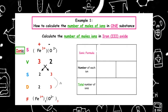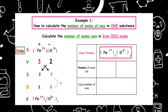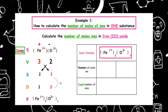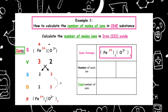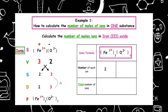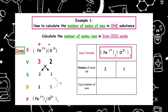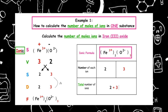Next, we write out the ionic formula and calculate the number of each ion in that formula. We have 2 Fe³⁺ ions, because the 2 is outside the bracket, and we have 3 O²⁻ ions. The total number of ions is 2 plus 3, which equals 5.